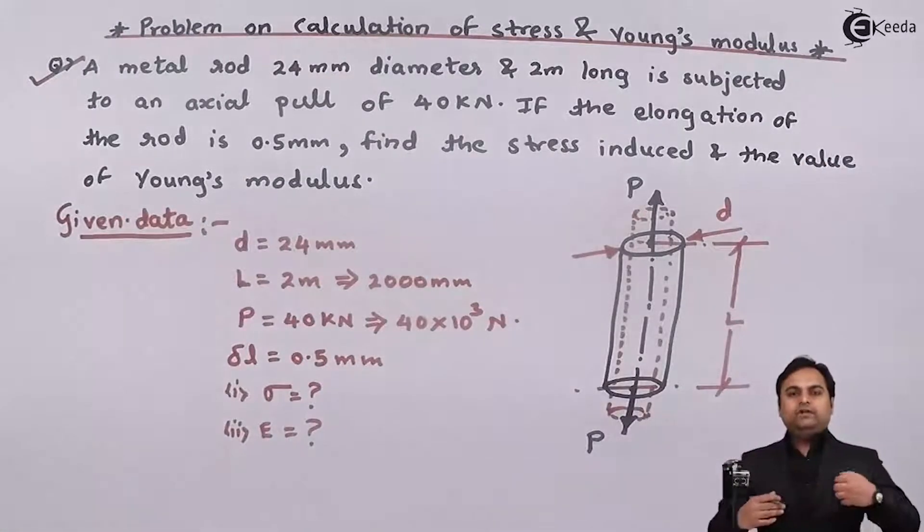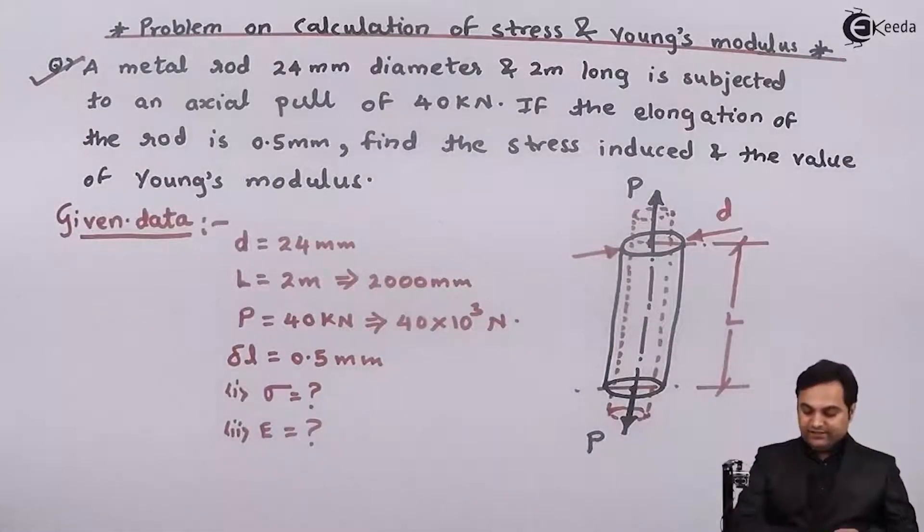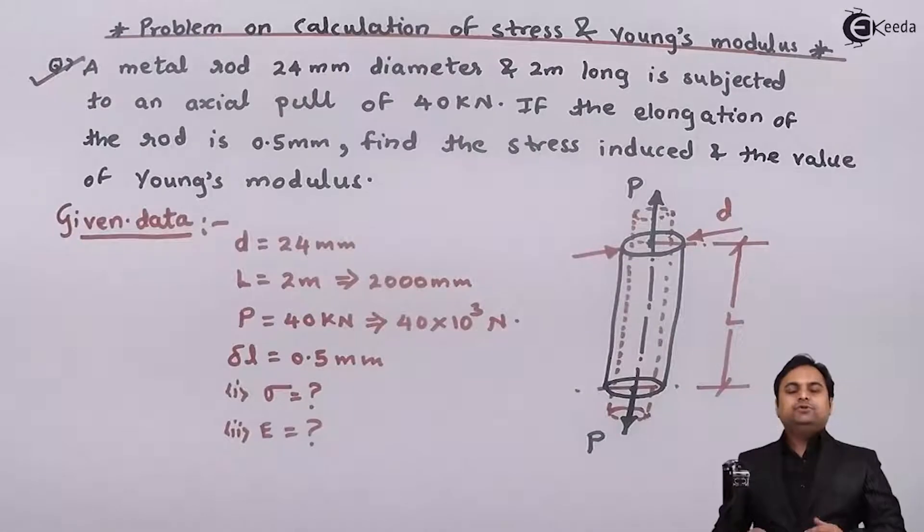So when a rod is subjected to a pull type of load its length increases and diameter decreases. So now the questions are to calculate stress and Young's modulus. So let us try to get the solution for this problem.